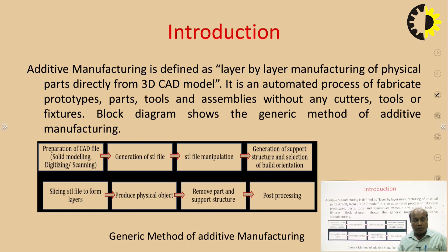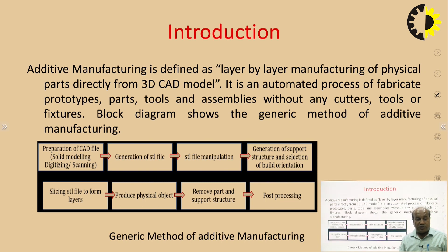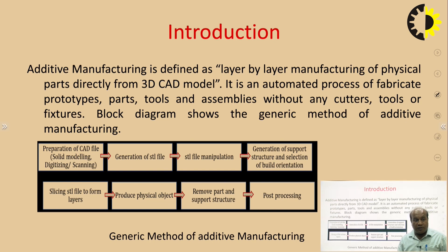Then, we have to convert that CAD model or CAD file into a format known as STL file format. We will discuss about this STL file format. Then, we have to manipulate these STL files. After generating the STL file, we need to generate the support structure and the orientation of the build part. The next step is slicing the STL file to form different layers, as additive manufacturing is layer by layer manufacturing. After slicing, the last step is to produce the physical object using any additive manufacturing technology. After building the part, we have to remove the part and support structure, followed by post-processing.